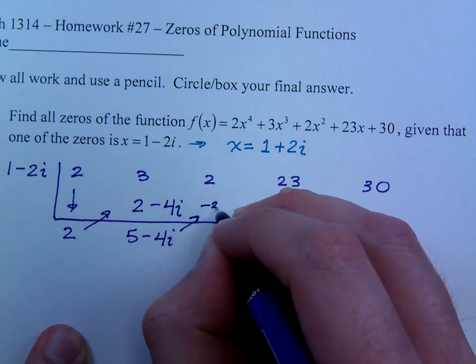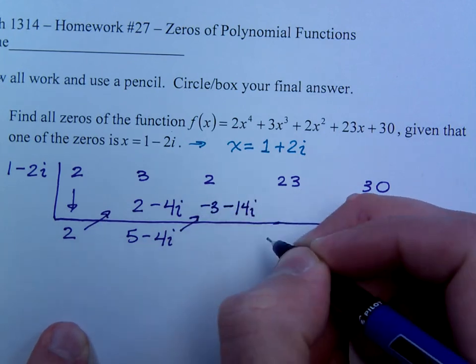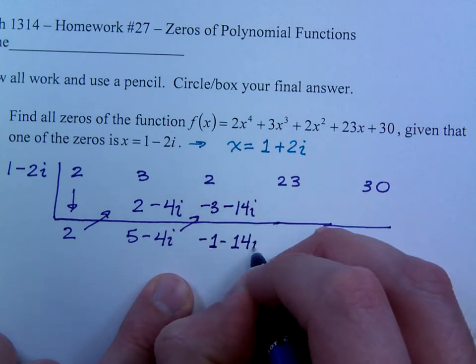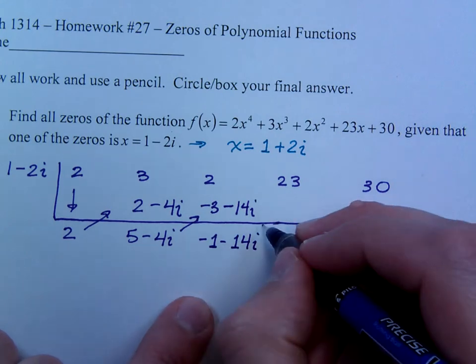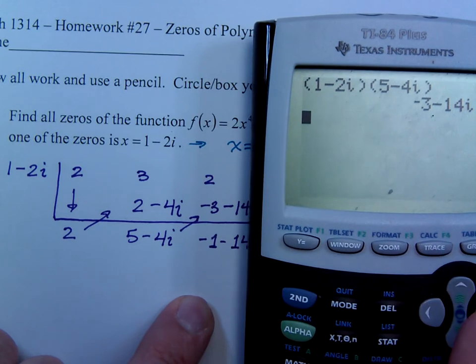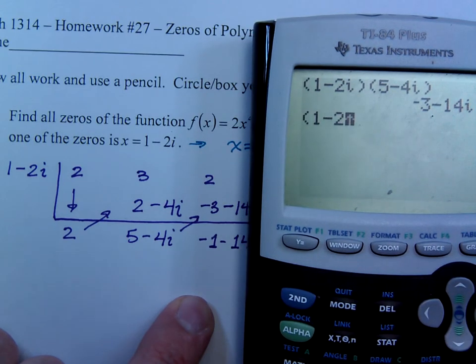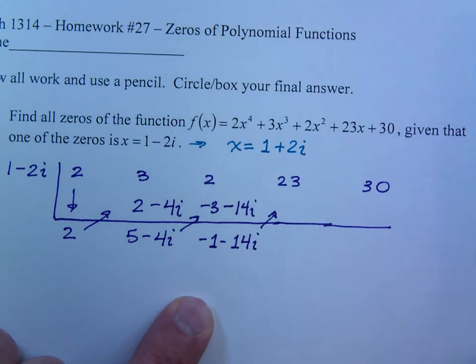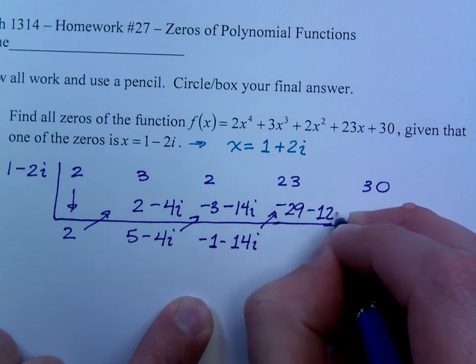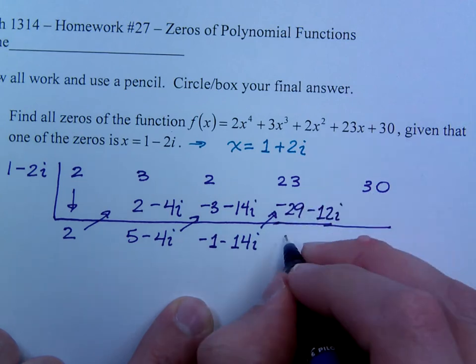So, negative 3 minus 14i. Combine this as negative 1 minus 14i. Then, I've got to multiply again. So, this is 1 minus 2i times negative 1 minus 14i. Negative 29 minus 12i. All right?